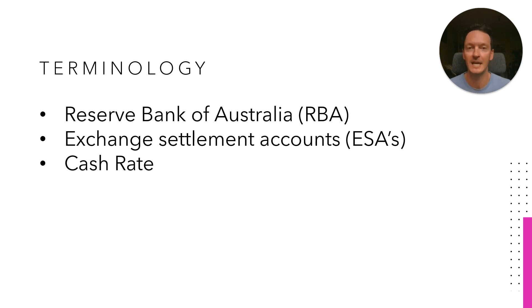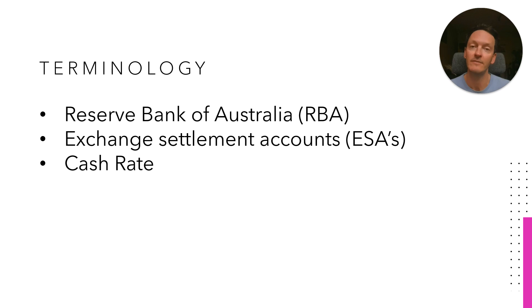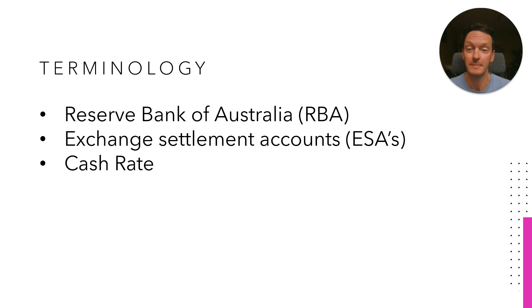We've got this thing called a cash rate. The cash rate is the rate at which financial institutions will borrow and lend money to each other. You can think of it as the price of the banks borrowing and lending money.